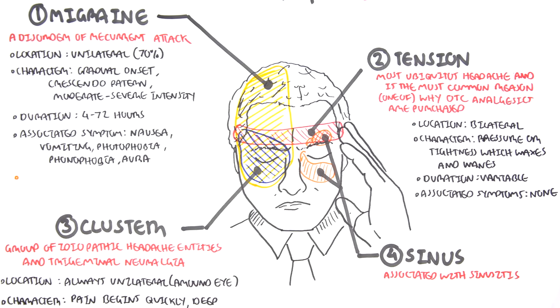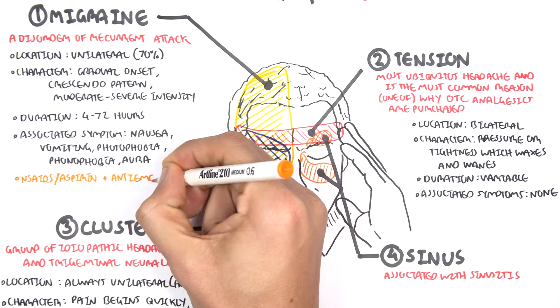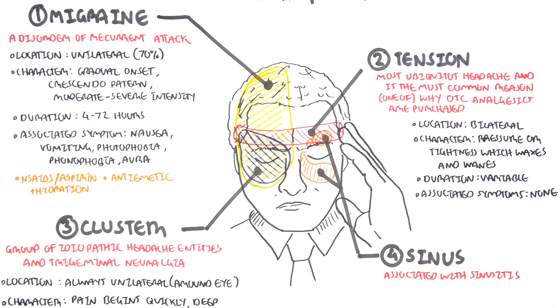For migraines, which are recurrent, NSAIDs or aspirin plus antiemetics and hydration is important. Antiemetics are drugs that stop vomiting.